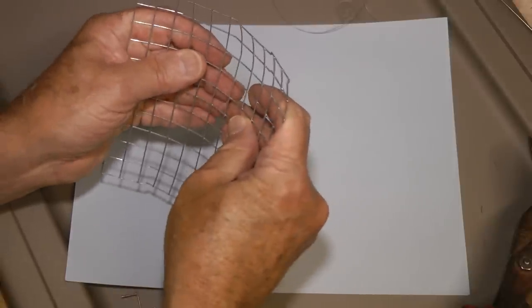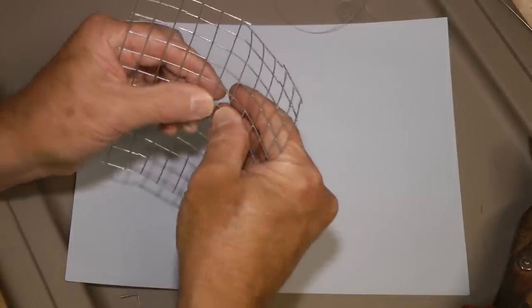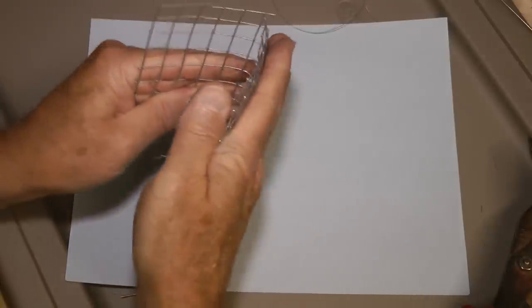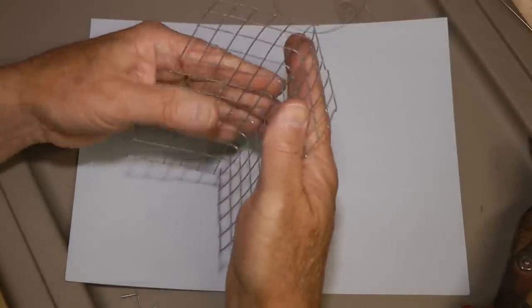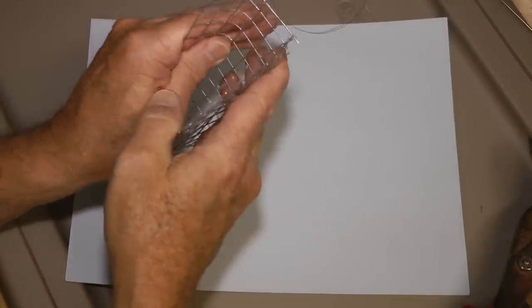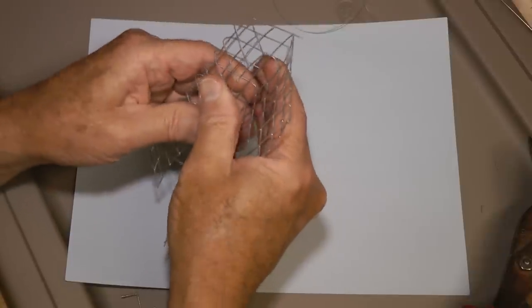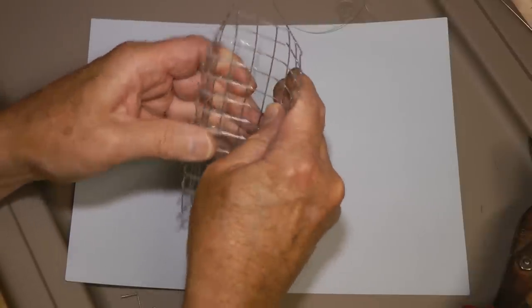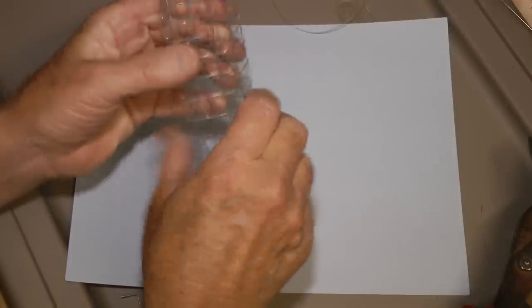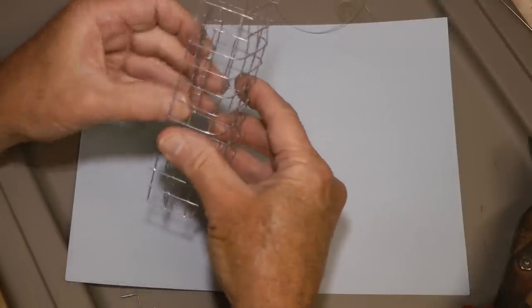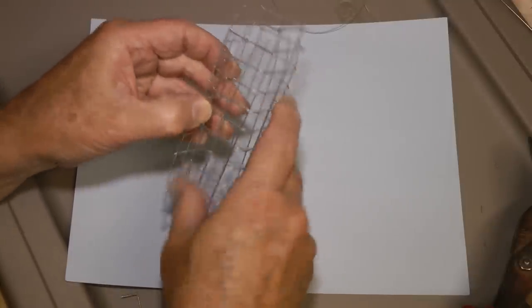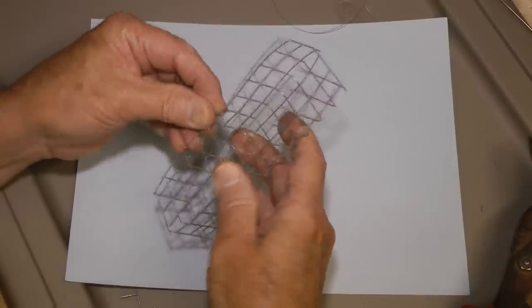Now what this is going to do is we're going to fold this where our cuts were to make the cage. Just that easy, there's our basic cage.